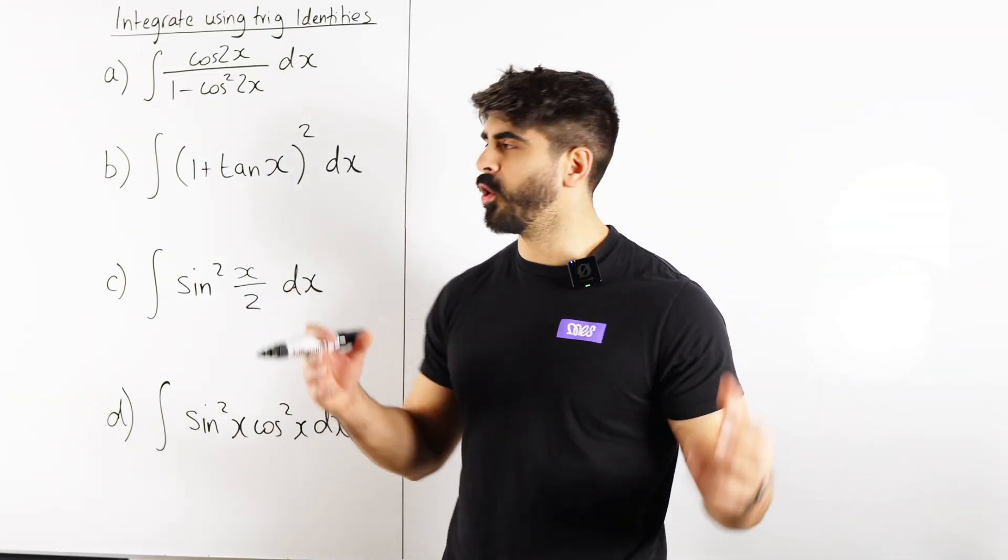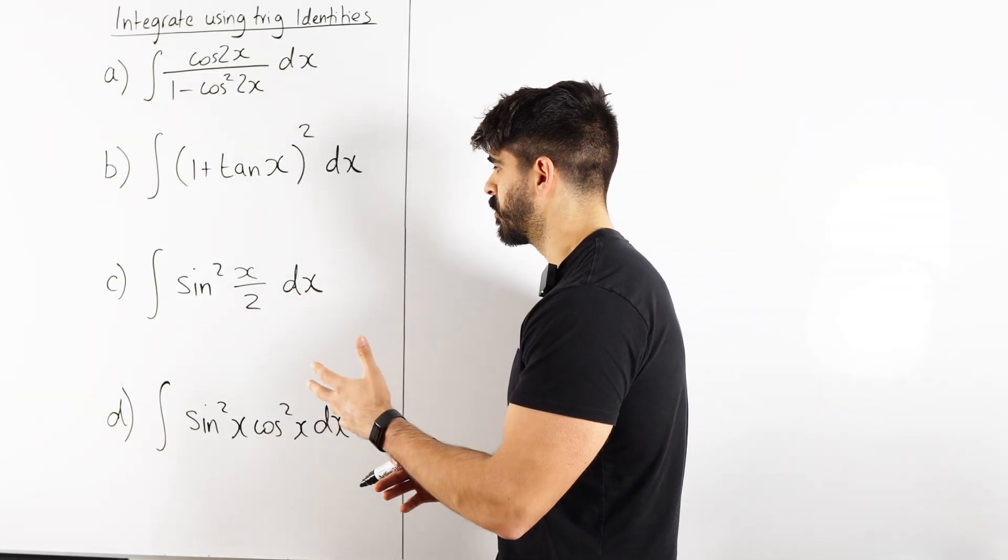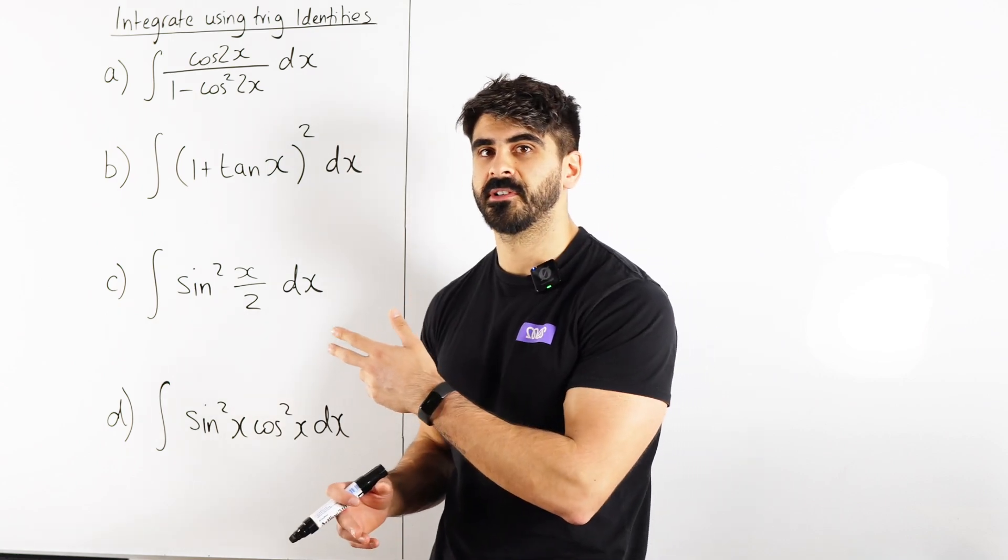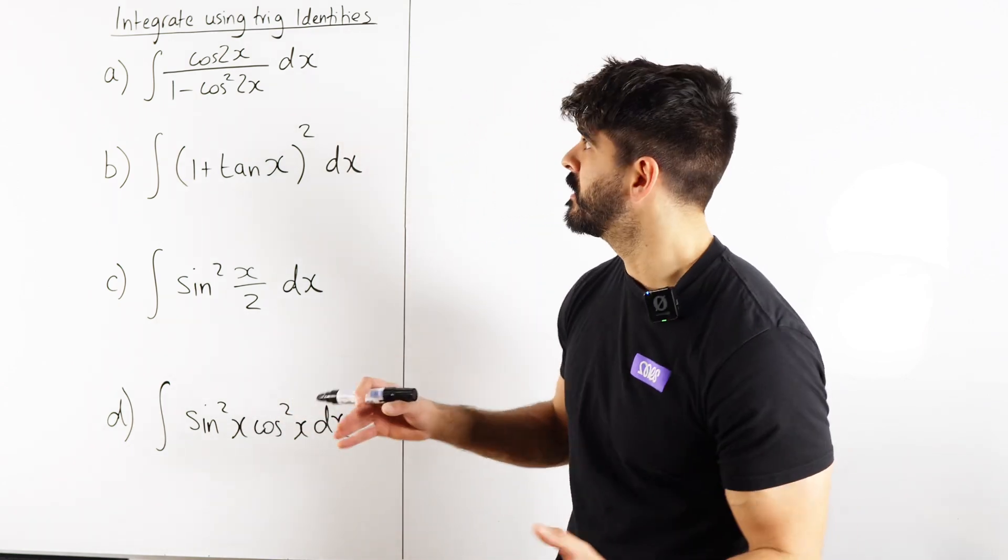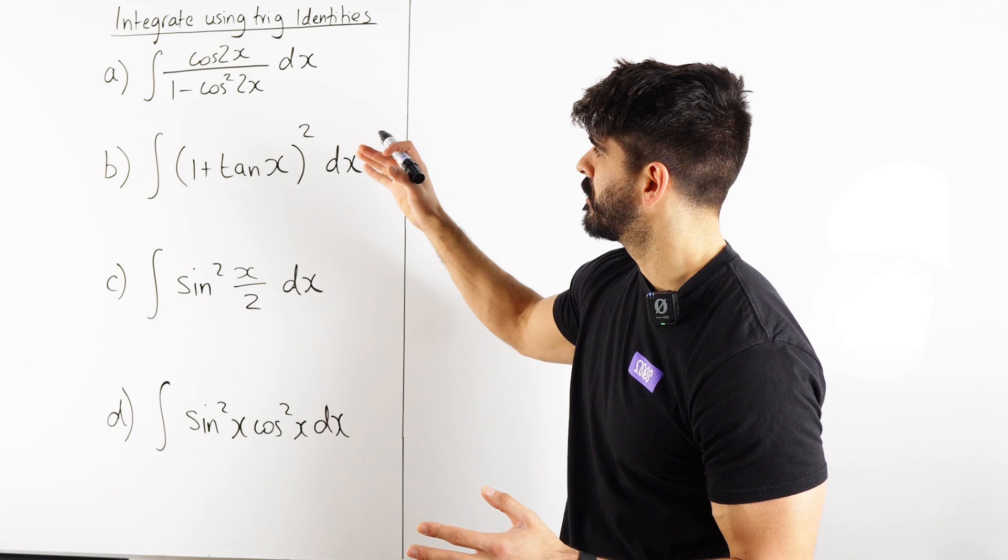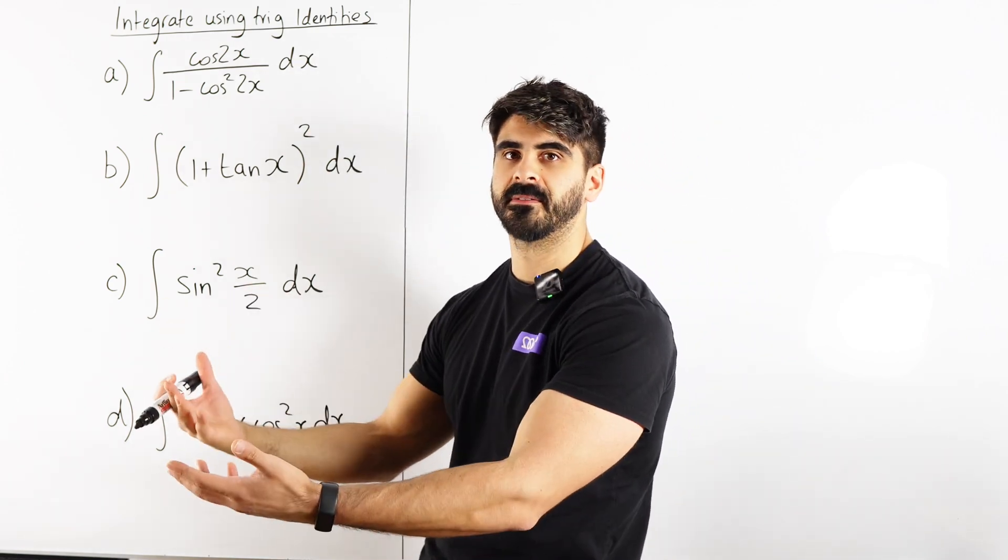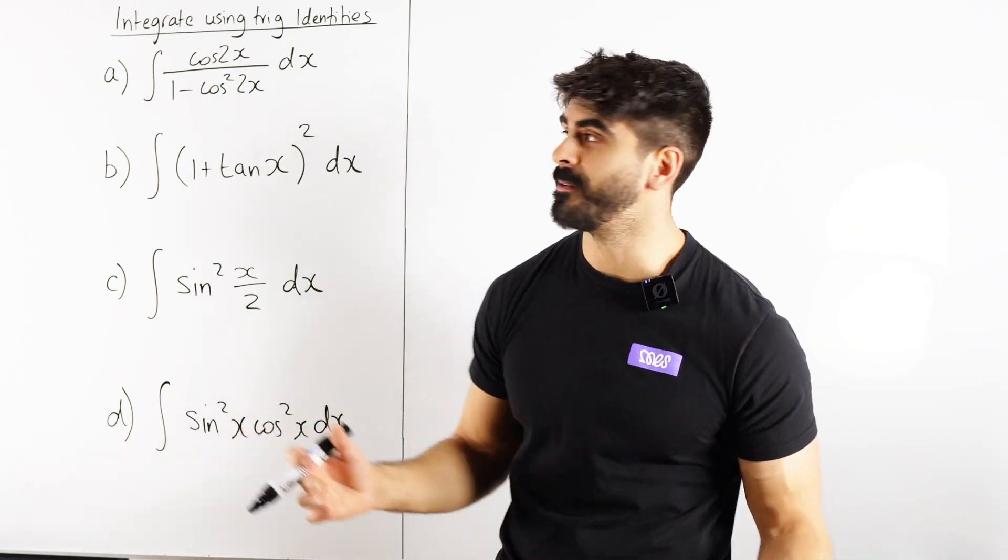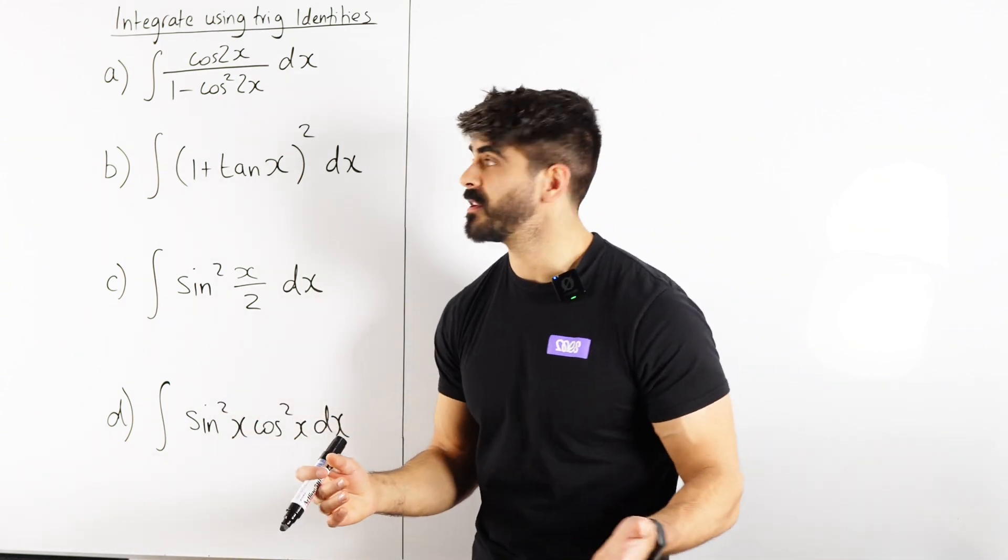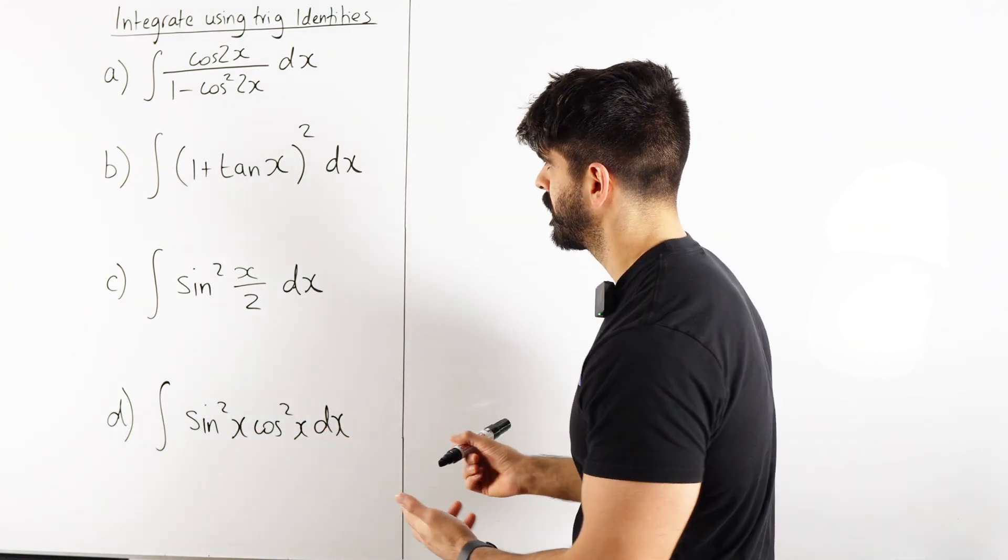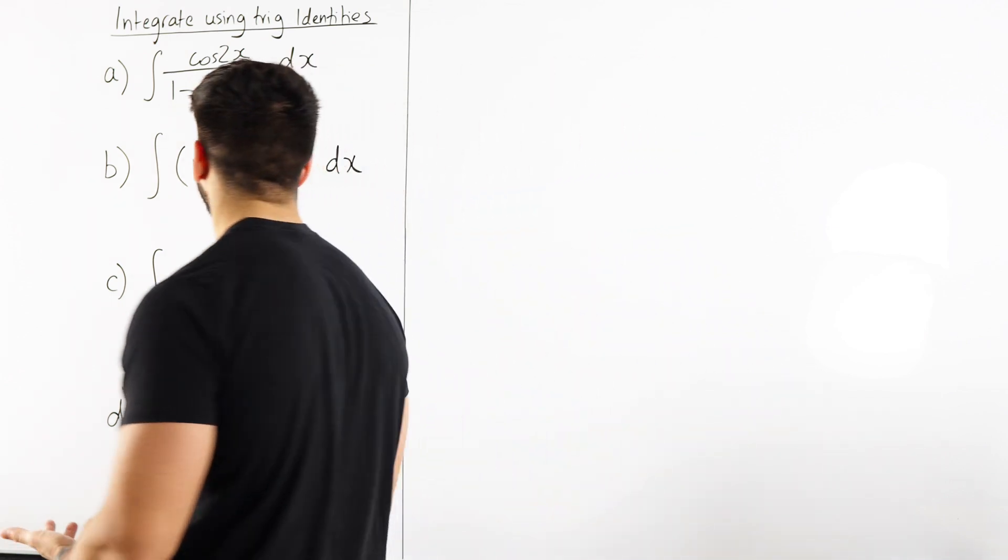Now that we're hopefully reasonably comfortable with integration by recognition, let's make sure we know how to integrate using trig identities, which basically manipulates the integrals to give us something that we can just use recognition with. It just takes practice. Let's go part by part. It's going to gradually get harder.